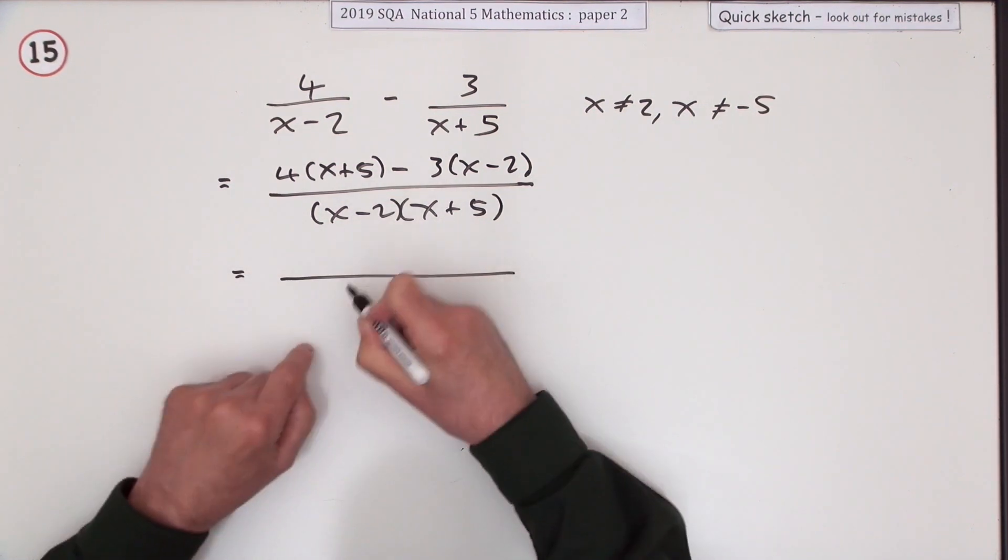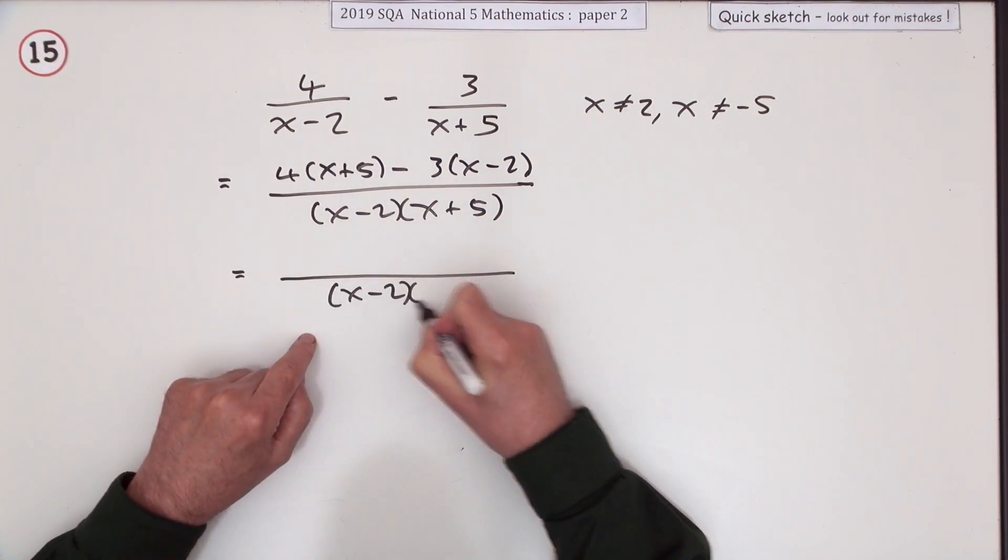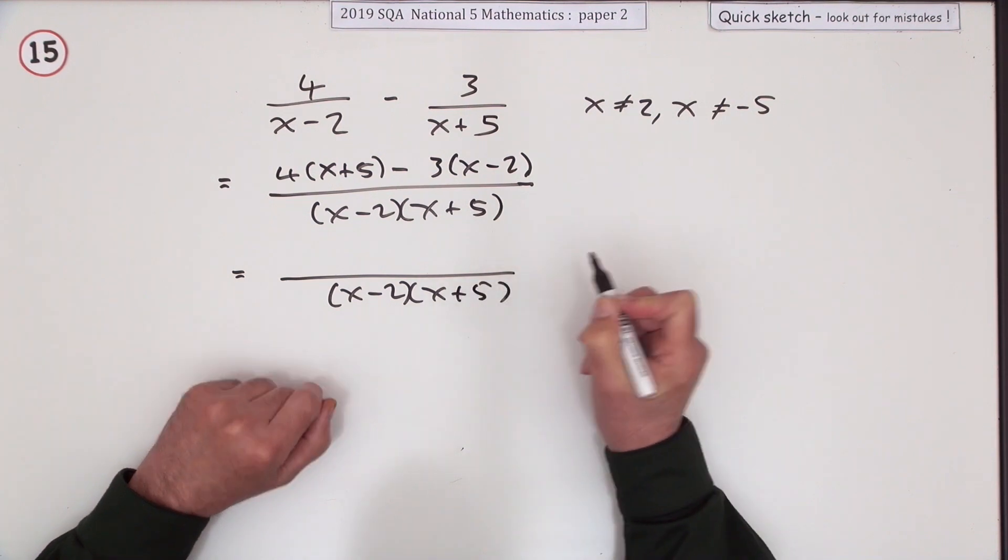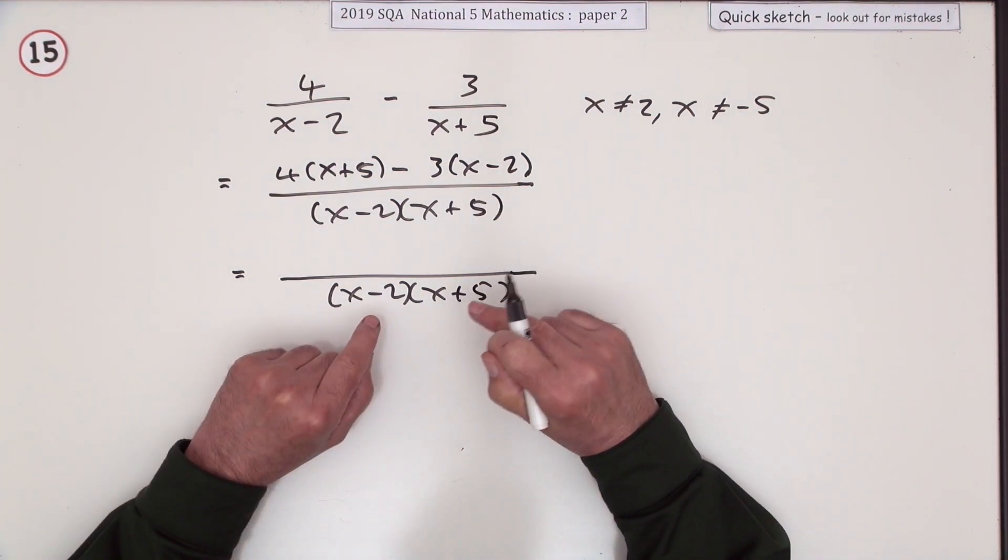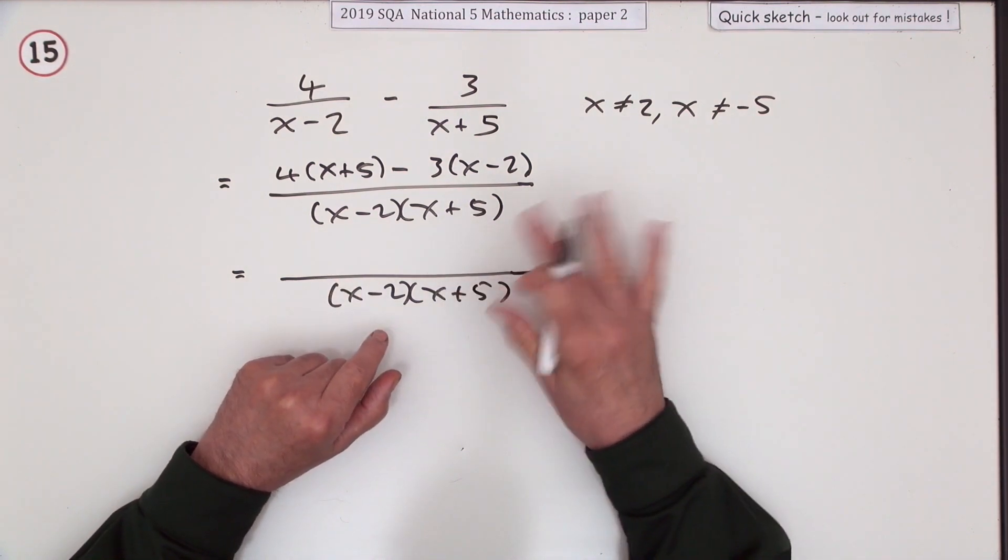We'll just leave that part alone. Don't multiply that out, there's no need to do that. It's actually neater to have it factorized. It could also turn out that maybe something might cancel down with one of them.